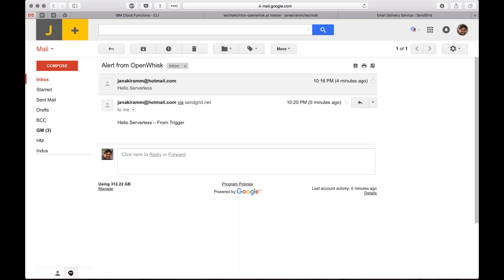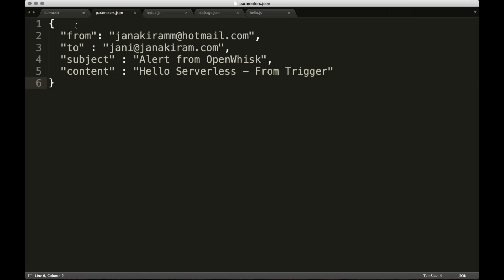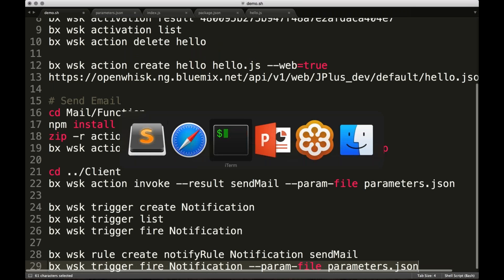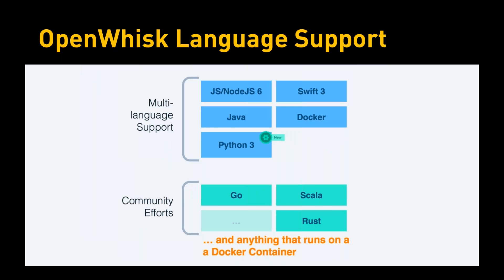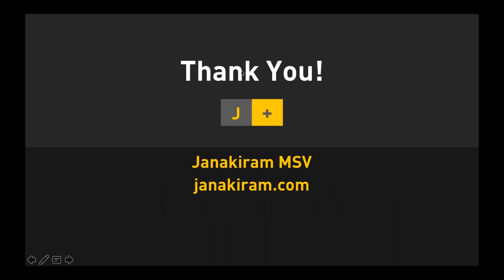So that brings us to the end of the demo. Now things start to fall in place. You have a source — in our case the command line — which fires the trigger. The trigger asks what actions need to be invoked, rules show all the associated actions, and each action is executed in parallel and you get back the result. In our case the result was an email. That is the entire workflow.